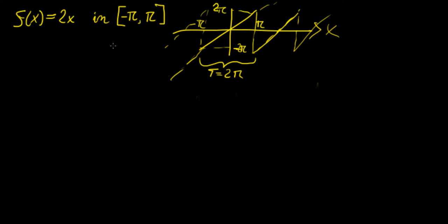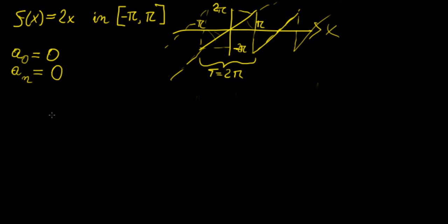Let's get started with this problem. We need to calculate the Fourier coefficient a₀. The first thing to notice is whether this function is even or odd — it's an odd function. So by definition, a₀ should be zero, because it represents the average value of the function within this symmetric interval, and the areas cancel out. Similarly, because the function is odd, aₙ is also going to be zero — that's one of the main definitions introduced in the beginning of this series on Fourier series.